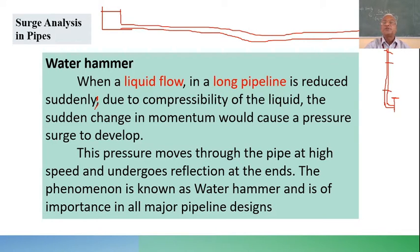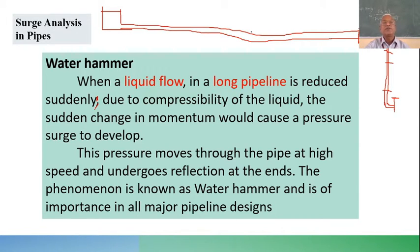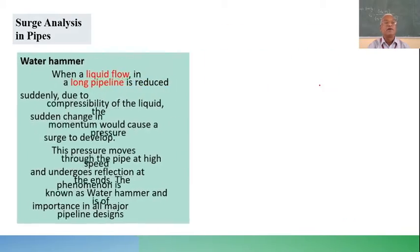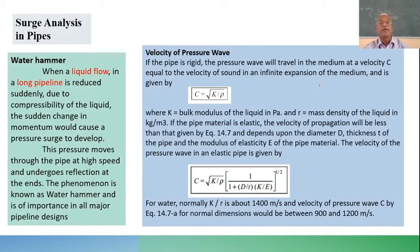When you close the valve suddenly, the pipe diameter effectively increases due to the higher pressure felt, and this wave of increased pressure travels up to the reservoir end and then is reflected back. It is a forward-and-backward motion of the pressure wave. This pressure wave moves at the velocity of sound and is called celerity.